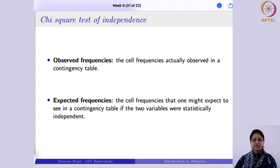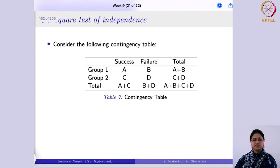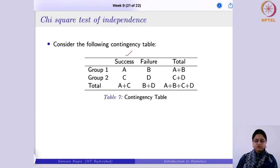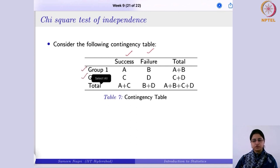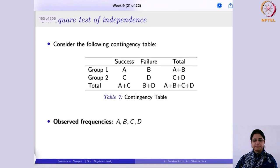The other term is expected frequency. These are the cell frequencies that one might expect to see in the contingency table if the two variables were in fact independent. To understand this, consider a contingency table with two categories — success and failure on one side, and group 1 and group 2 on the other. The observed frequencies are A, B, C, and D.